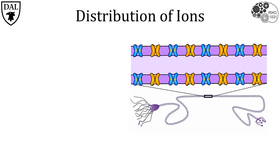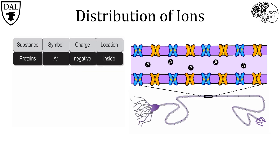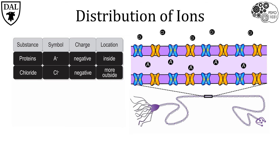Let's look at the concentration of different ions across the neuronal membrane. There are many ions in neurons, but these are the major players involved with electrical signaling. First are large negatively charged proteins, represented by the symbol A⁻, which are predominantly found inside the neuron. Next, chloride or Cl⁻ carries a negative charge and is located mostly outside the neuron.